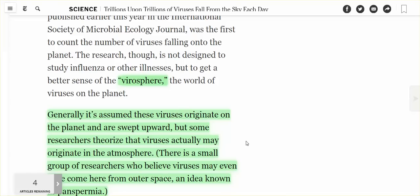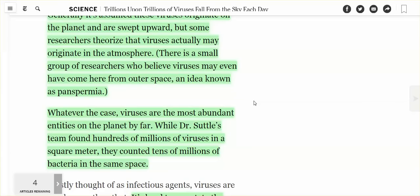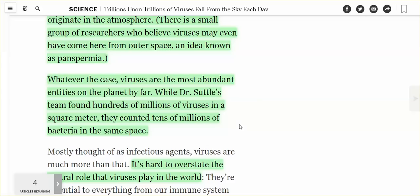Generally it's assumed these viruses originate on the planet and are swept upward, but some researchers theorize that viruses actually may originate in the atmosphere. There is a small group of researchers who believe viruses may even have come here from outer space, an idea known as panspermia. Whatever the case, viruses are the most abundant entities on the planet by far. I think those viruses and bacteria were sprayed, you know, part of the geoengineering.